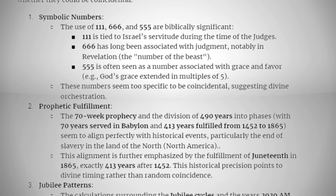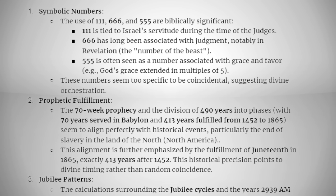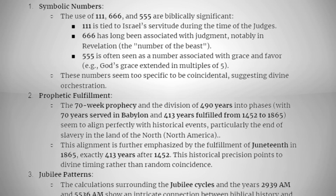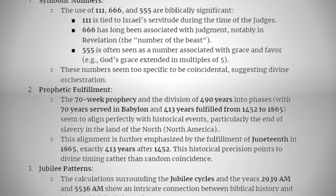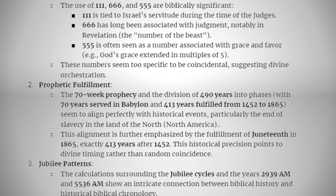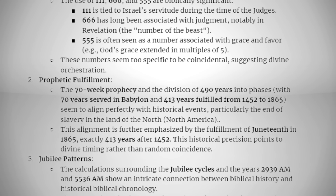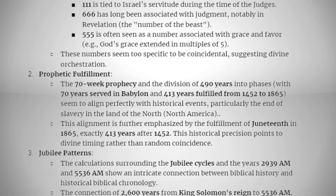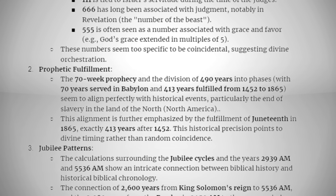The 70 weeks prophecy and the division of 490 years into phases — with 70 years served in Babylon and 413 years fulfilled from 1452 to 1865 — seem to align perfectly with historical events, particularly the end of slavery in the land of the north. This alignment is further emphasized by the fulfillment of Juneteenth in 1865, exactly 413 years to the day after the 1452 Dum Diversus. This historical precision points to divine timing rather than random coincidence.